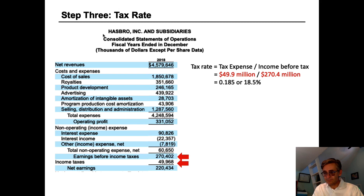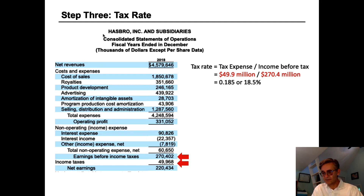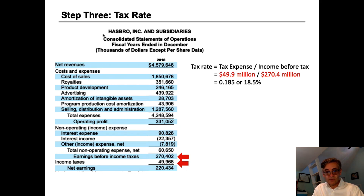Step three is to calculate the company's tax rate. If we divide the tax expense by the income before tax, we can derive the effective tax rate. The tax rate equals tax expense divided by income before tax. For Hasbro, that is $49.9 million divided by $270.4 million, giving us an effective tax rate of 18.5%.